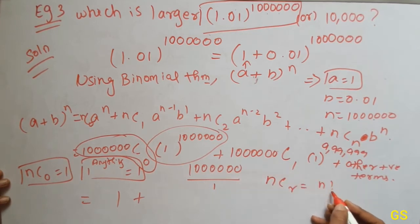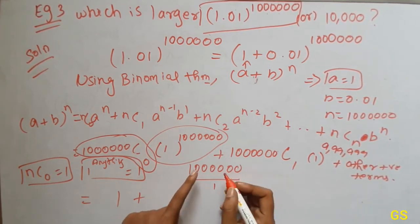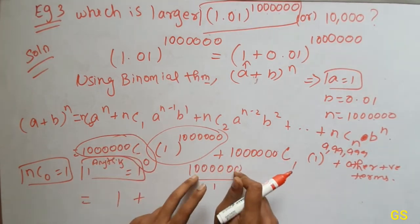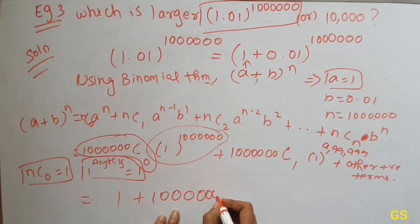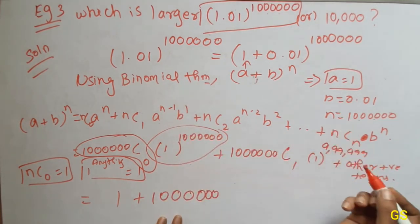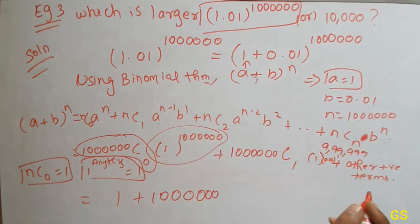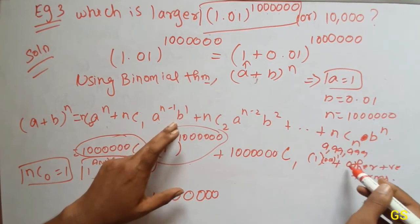nCr is equal to n factorial by (n minus r) factorial into r factorial. So n is 10,000,000 factorial by (10,000,000 minus r), that is 9,999,999 factorial into r factorial. So this is easy to put 10,000,000. Using nc0 times a power n plus nc1 times a power (n minus 1) into b power 1.